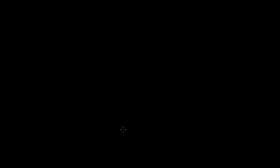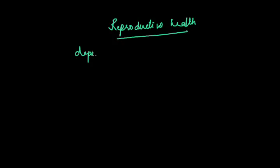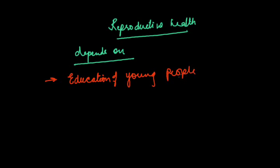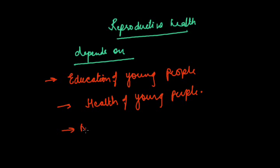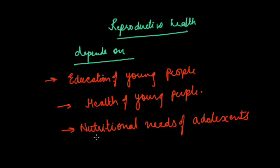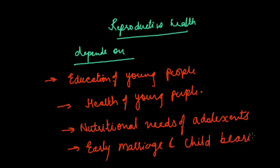Let us discuss reproductive health. In human population, different individuals are at different stages of development of life such as infants, children, juveniles, adolescents, and aging. Reproductive health of society depends on factors such as: education of the young people, health of the young people, nutritional needs of adolescents, and early marriage and childbearing.